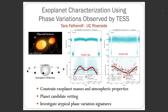Now we have one of our very own LOC members. Tara, please take it away. Hi, I'm Tara Featheroff, a postdoc at UC Riverside. I'm working on characterizing transiting exoplanets using the non-transiting portions of their light curves. Modulations that occur as a planet orbits around the star are called phase variations, typically caused by gravitational or reflection effects. I'm performing a phase variation analysis on all known and candidate planets observed by TESS to investigate whether phase variation analysis is useful for characterizing exoplanets and performing planet candidate vetting. I'm also interested in unusual phase variation signatures that may be caused by other astrophysical mechanisms. Check out my poster on Slack.